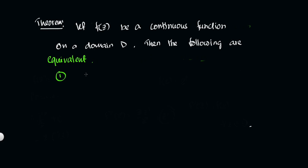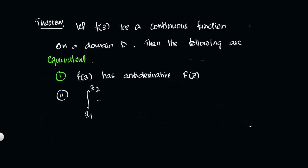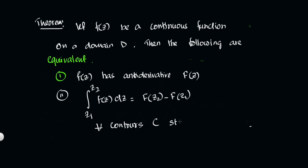Statement 1: f(z) has an anti-derivative — that is, capital F(z) exists such that F'(z) = f(z). Statement 2: The integration from z1 to z2 of f(z) dz equals F(z2) minus F(z1), for all contours C — which is a collection of piecewise smooth curves — starting from z1 and ending at z2.